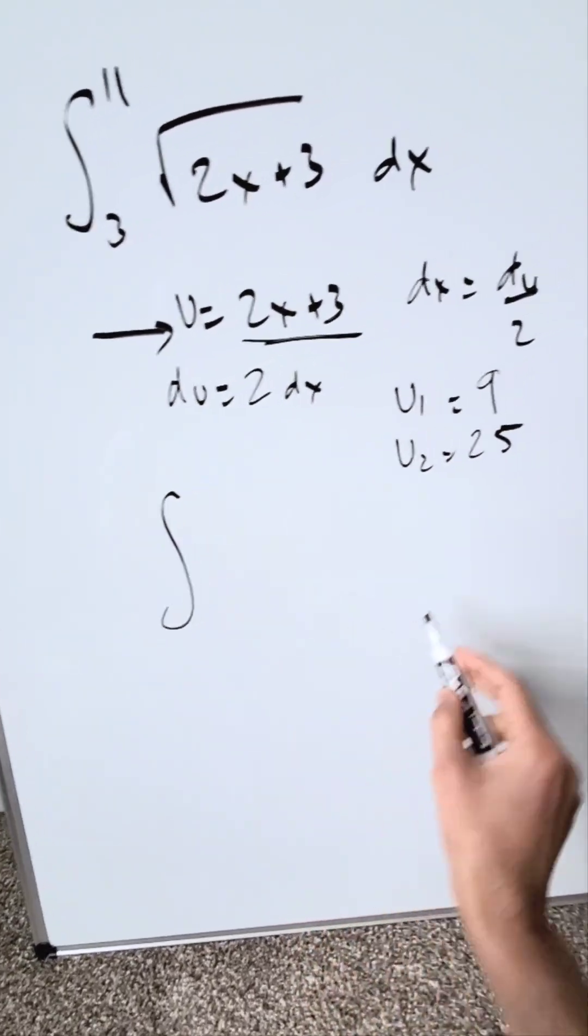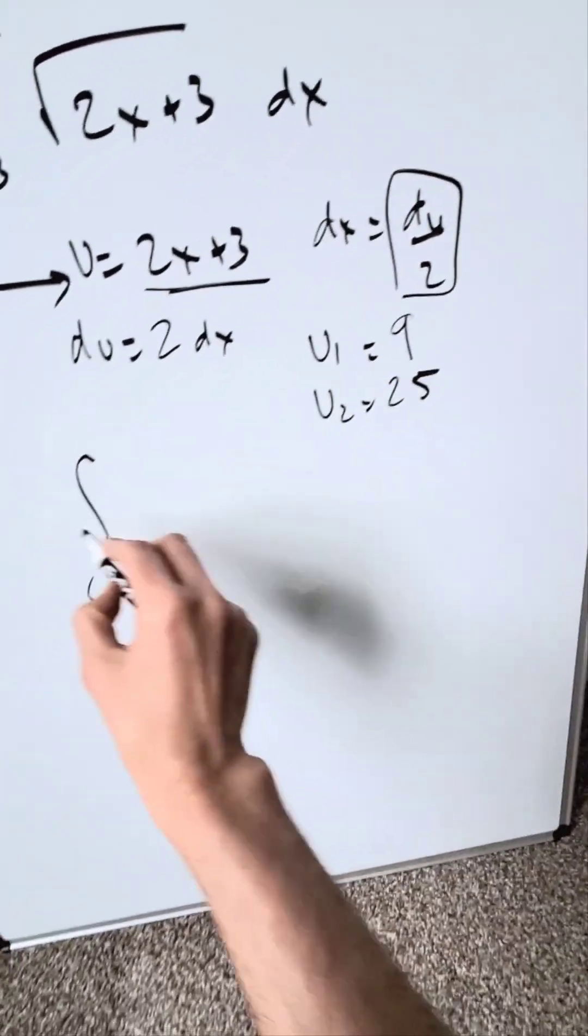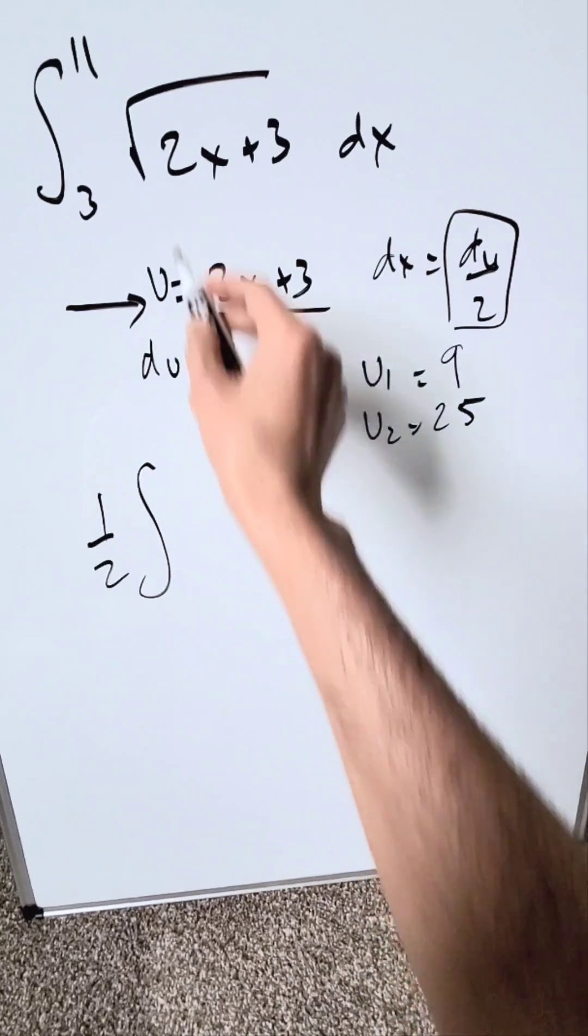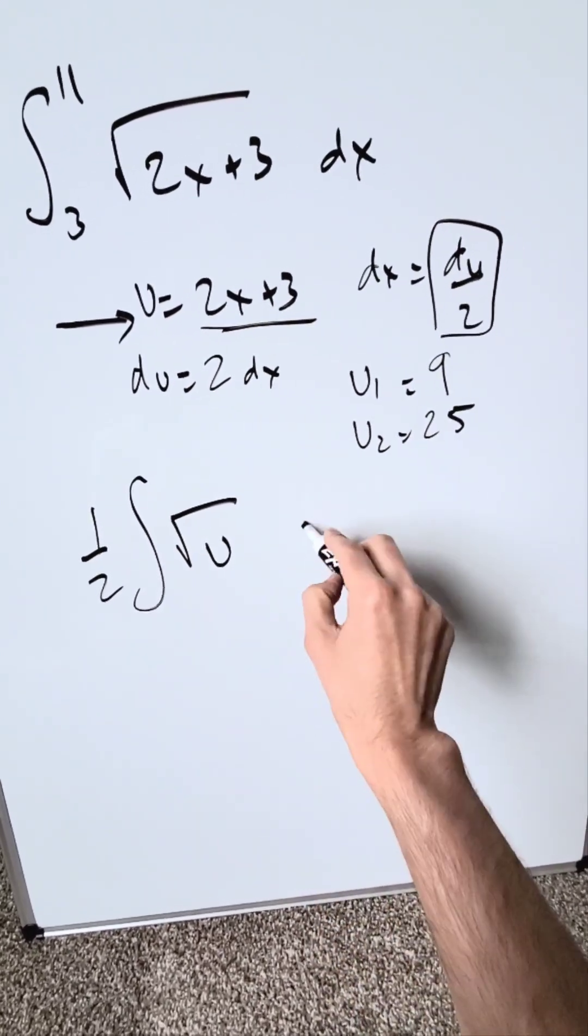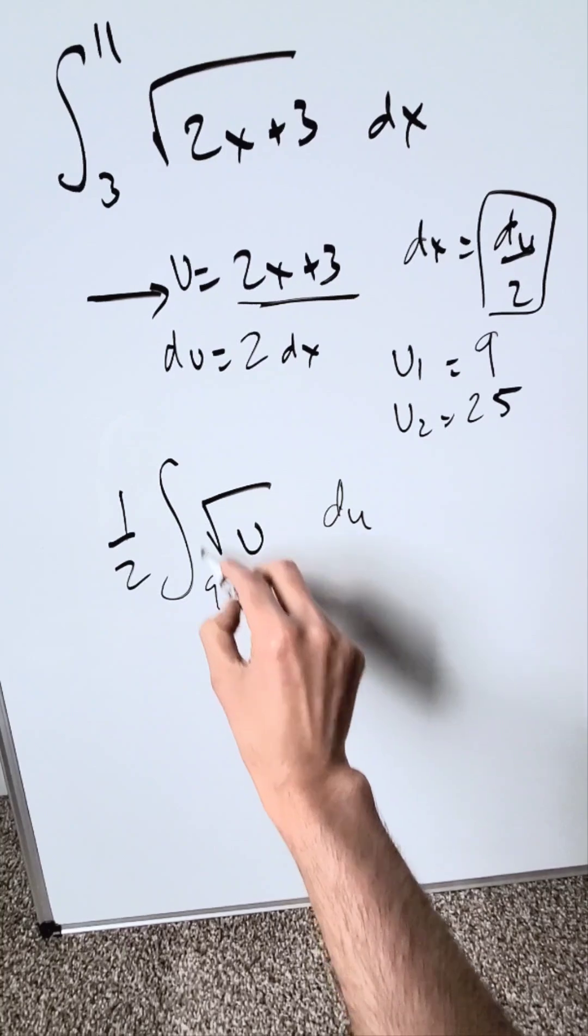Suddenly, my new integral is this. Keep in mind I have a 1 over 2. I'll bring that right out. 1 over 2. I have here in the square root u based on my substitutions. I have a du. My limits are 9 and 25.